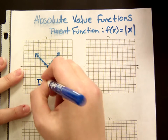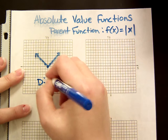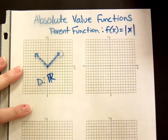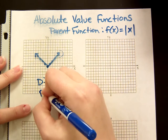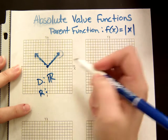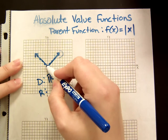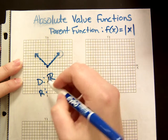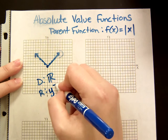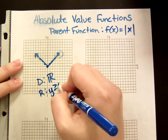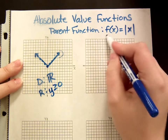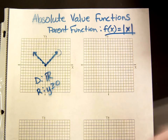The domain is all real numbers because if you look left and right, it goes on forever. The range in this case — the lowest point is at 0 on your y-axis, so all your y's are greater than or equal to 0. That's the parent function: absolute value of x.